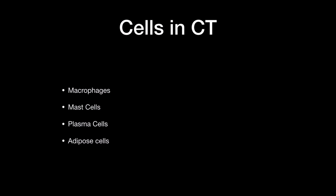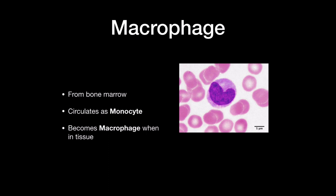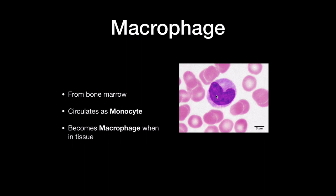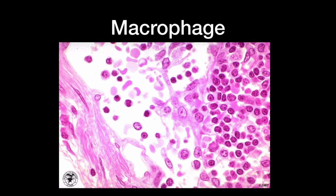The macrophage comes from the bone marrow and circulates in the blood as a monocyte; when it enters tissue, it becomes a macrophage. Think of it like Pac-Man — it goes around the tissue, engulfs different substances that shouldn't be there, and presents them to other white blood cells to initiate a response. Under the microscope, macrophages are characterized by a bean-shaped nucleus. Looking at a slide, you can identify macrophages by this bean-shaped or kidney-shaped nucleus.